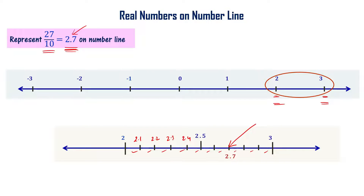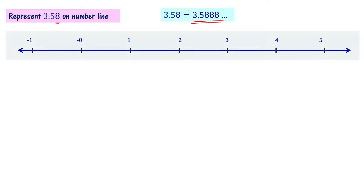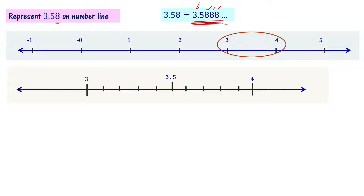Let's look at another problem: represent 3.58̄ (i.e., 3.5888...) on the number line. This is a rational number because it is a non-terminating but recurring decimal. So 3.5888... lies between 3 and 4. We zoom in and divide the portion between 3 and 4 into 10 equal parts, giving us 3.1, 3.2 ... up to 3.9.